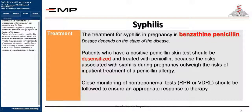Tetracyclines are contraindicated in pregnancy and erythromycin may not adequately treat the fetus. The treatment for syphilis in pregnancy is benzathine penicillin, with dosage depending on the stage of disease. Patients with a positive penicillin skin test should be desensitized and treated with penicillin, because the risks associated with syphilis in pregnancy outweigh the risks of inpatient treatment of penicillin allergy. Close monitoring of nontreponemal tests — RPR or VDRL — should be followed to ensure an appropriate response to therapy.